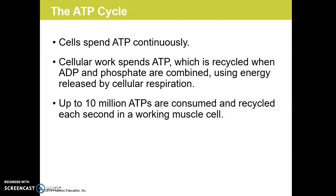Cells are continuously using ATP to power their activity. Whenever ATP is used and the third phosphate group is broken off, ATP is converted to ADP. ATP is recycled when a third phosphate group is put back onto it, using the energy released during cellular respiration. Up to 10 million ATP molecules can be consumed and recycled in a single second in a working muscle cell.